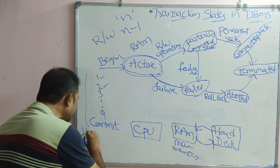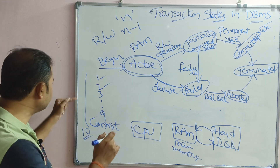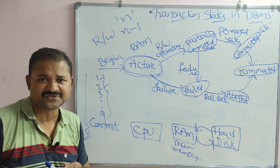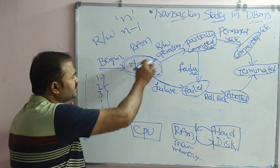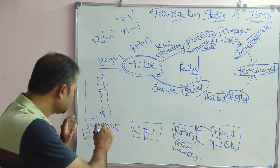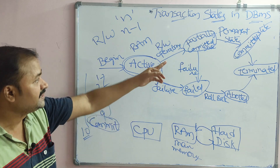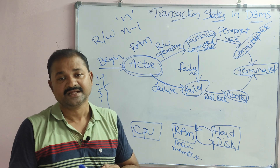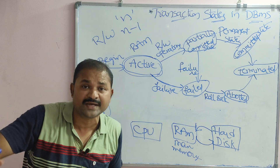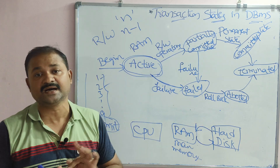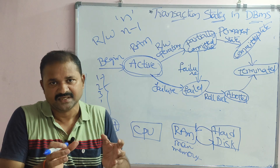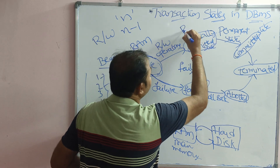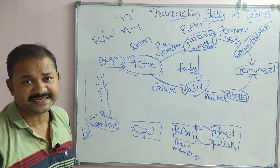For example, if a transaction contains 10 instructions, the first 9 are read and write instructions executed in the active state. Once all 9 complete successfully, the transaction moves to the partially committed state. In partially committed state, the commit instruction is executed. Commit means permanent store — once the commit instruction executes, all changes are permanently stored in the hard disk and become visible to the user. At this stage, the transaction is still in RAM.